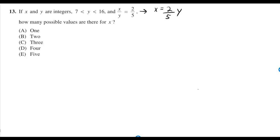If x and y are integers, y is between 7 and 16, and x over y is equal to 2 over 5, how many possible values are there for x?